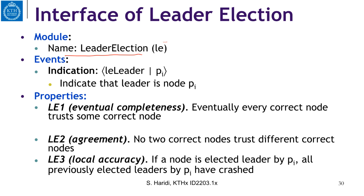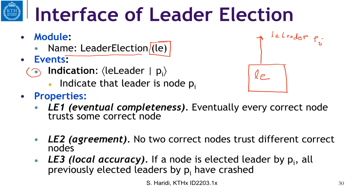Let us now look at the specification of a leader election abstraction. The instance has the name LE. It has one indication event: LE leader, which fires when the leader changes. The three properties are: eventual completeness — eventually every correct process trusts some correct process; agreement — no two correct processes trust different correct processes; and local accuracy — if a node is elected leader by Pi, then all previously elected leaders by Pi must have crashed.